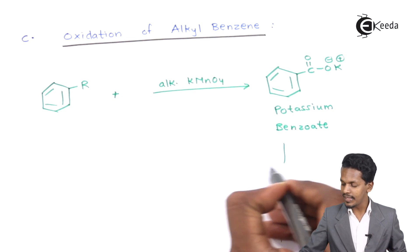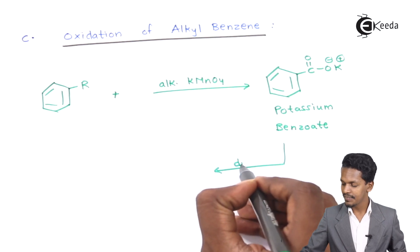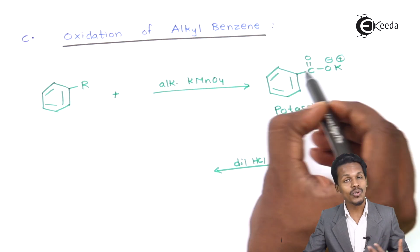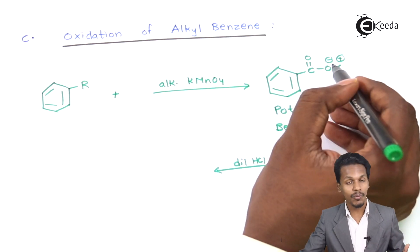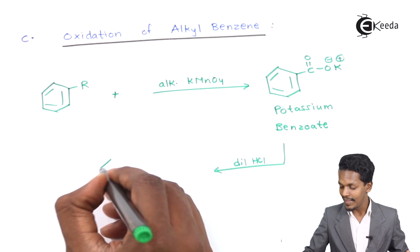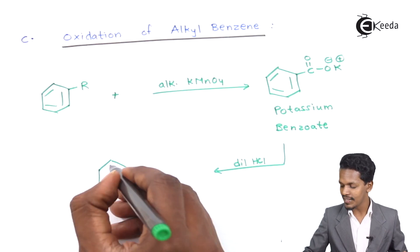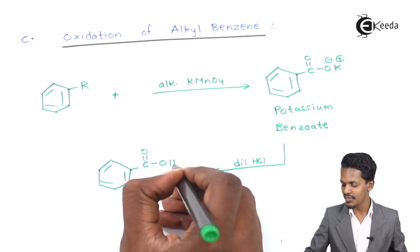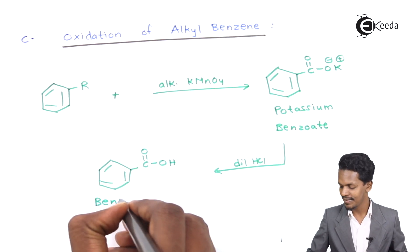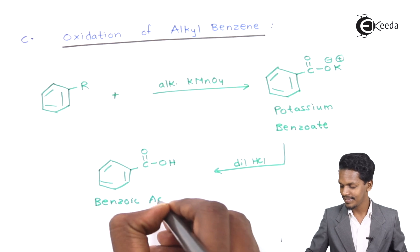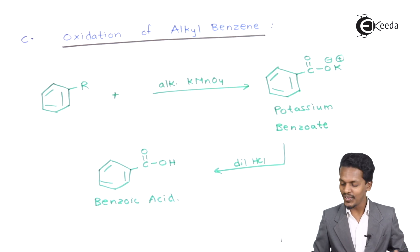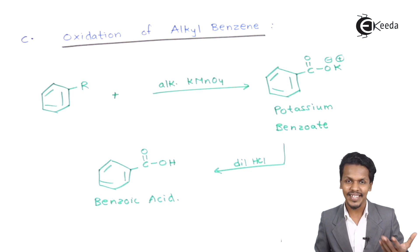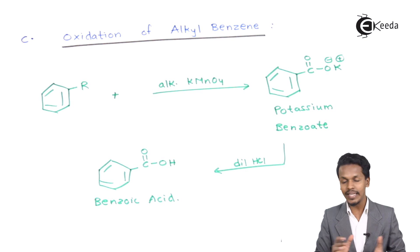On further reaction with dilute HCl, the potassium associated with the benzoate is removed and replaced by hydrogen from the dilute HCl. This converts potassium benzoate into COOH — that is benzoic acid. This is the general reaction showing how an alkyl benzene is converted into a carboxylic acid.